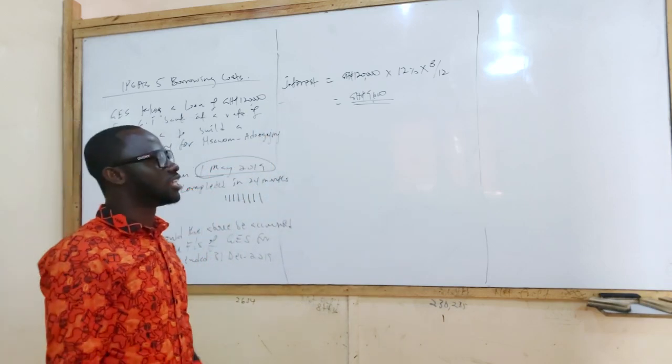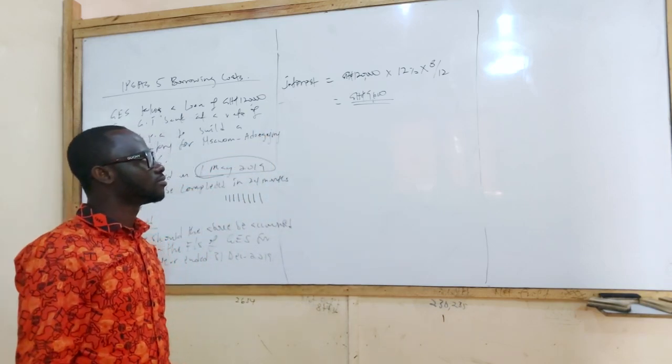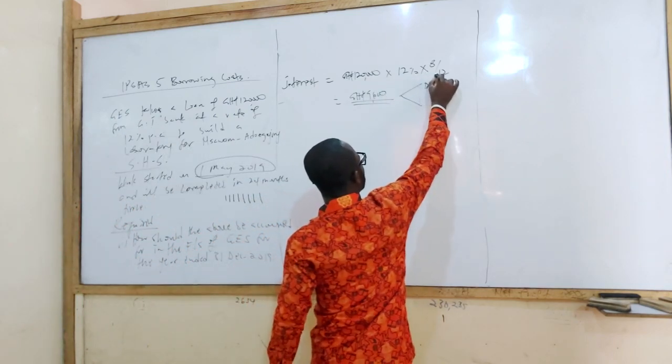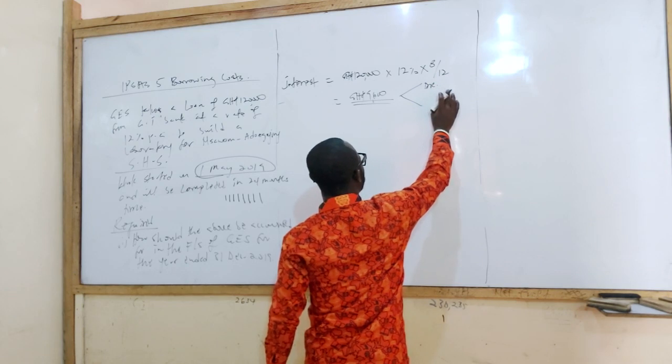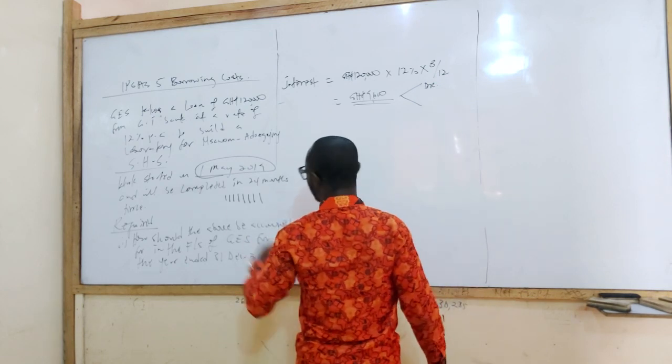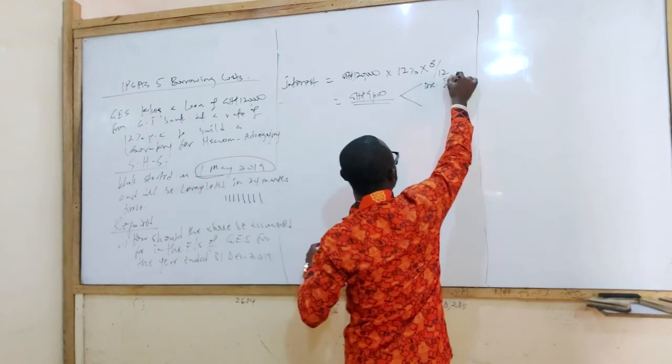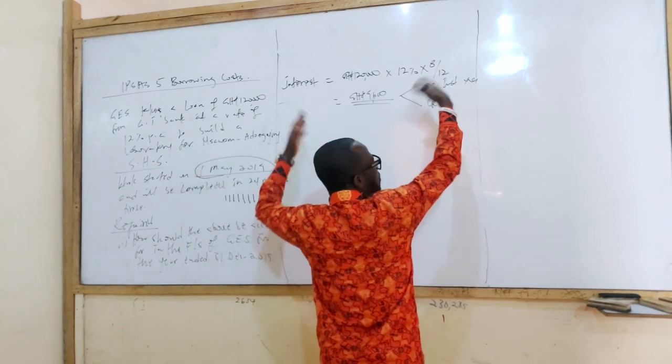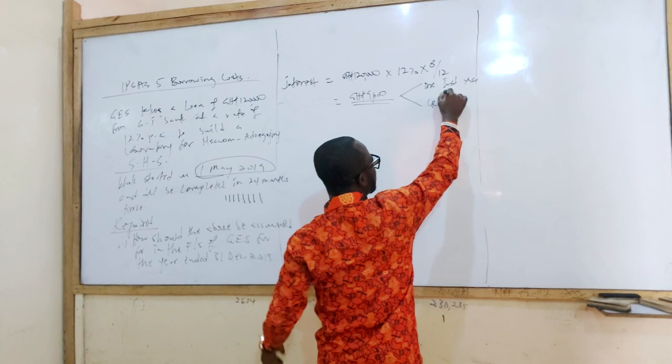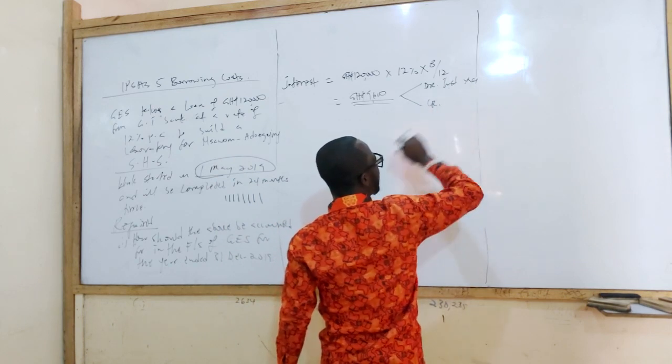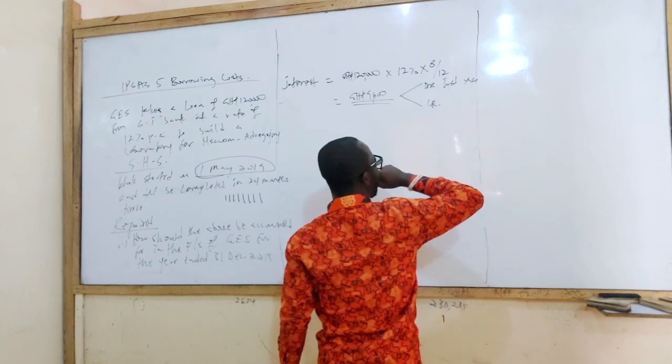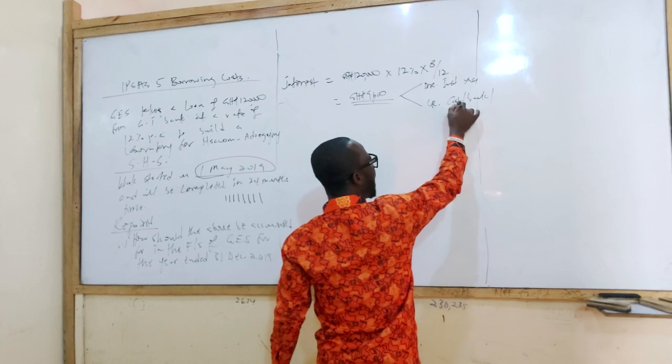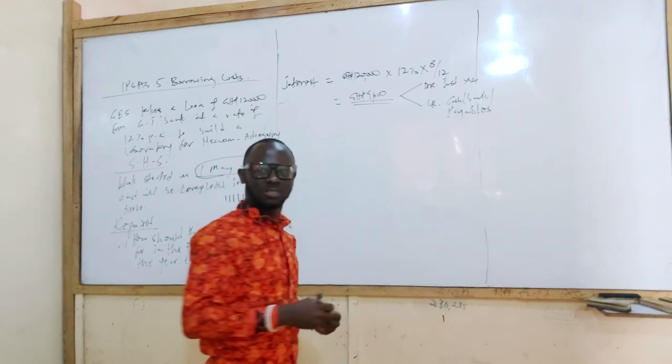Okay. So what is the double entry for this 9,600? Debit. What are they constructing? An infrastructure. An infrastructure. So we debit an infrastructure account and then we credit what? Or we debit a laboratory or PPE. Yeah. Are you getting it? Then we credit what? Who do we credit? Cash or bank if we actually pay it.